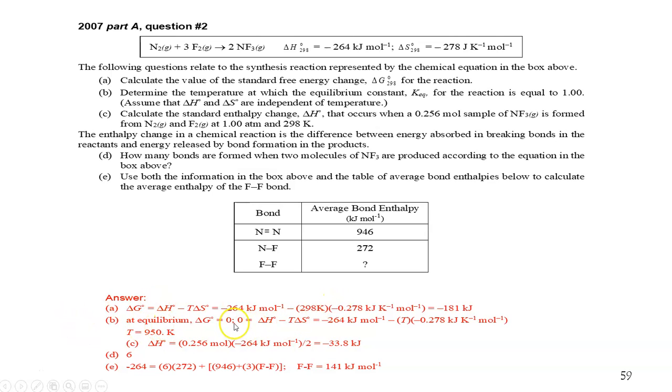Part B, let's see, they set it equal to zero. That's fine. They solve for T and T equals 950K. Wonderful.